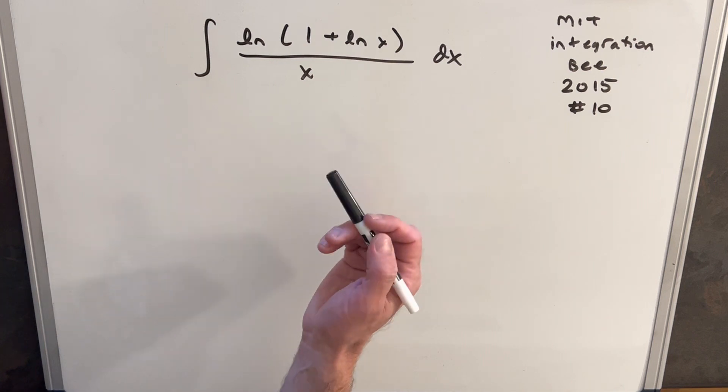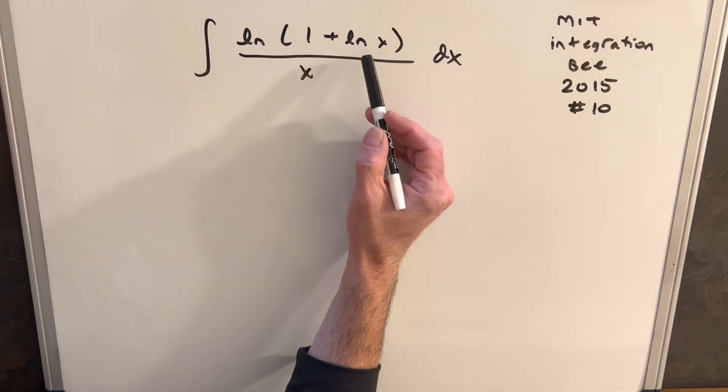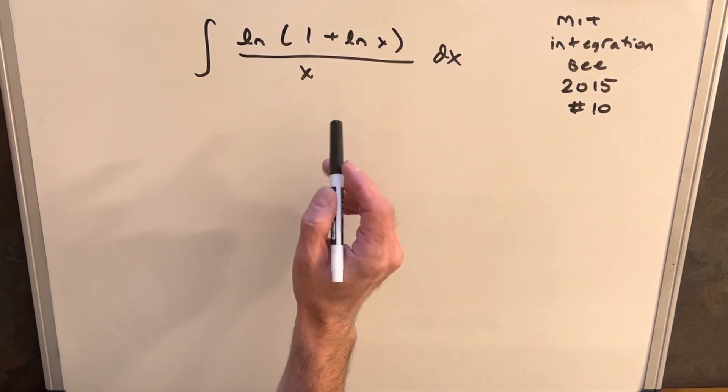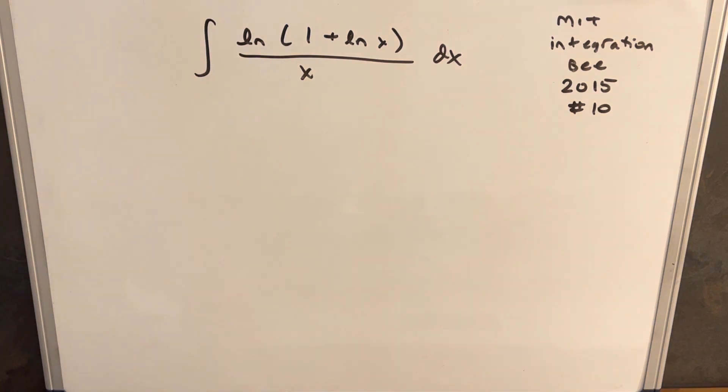The thing that stands out real quick is we have ln of x and then we have the derivative of ln x in the denominator. Or if we separate it out, we have 1 over x. So this looks like a good candidate for a u-substitution.